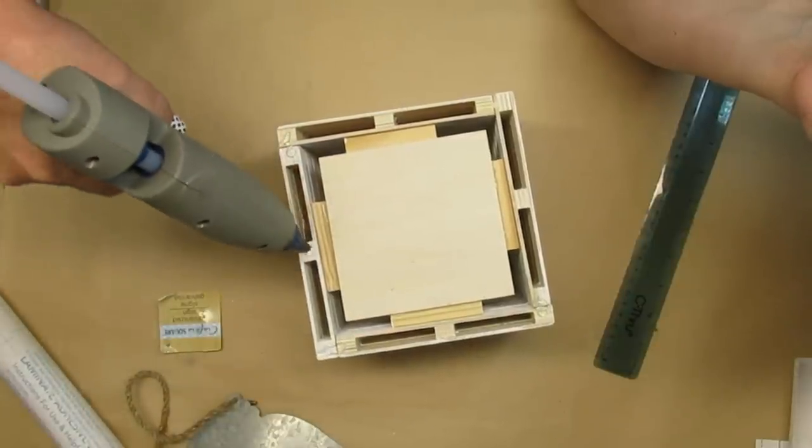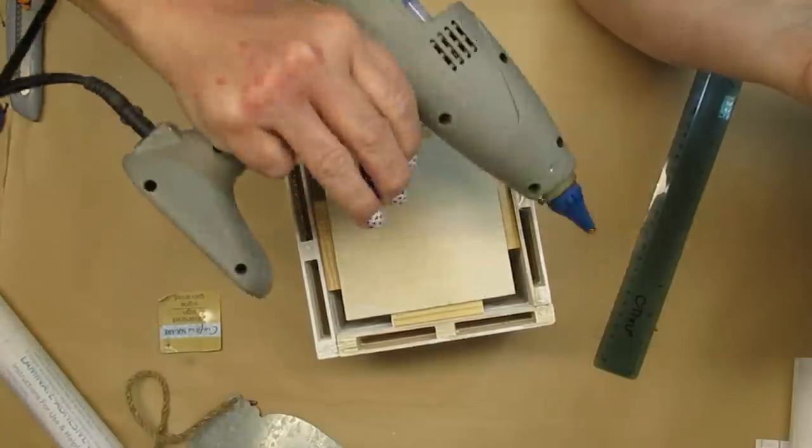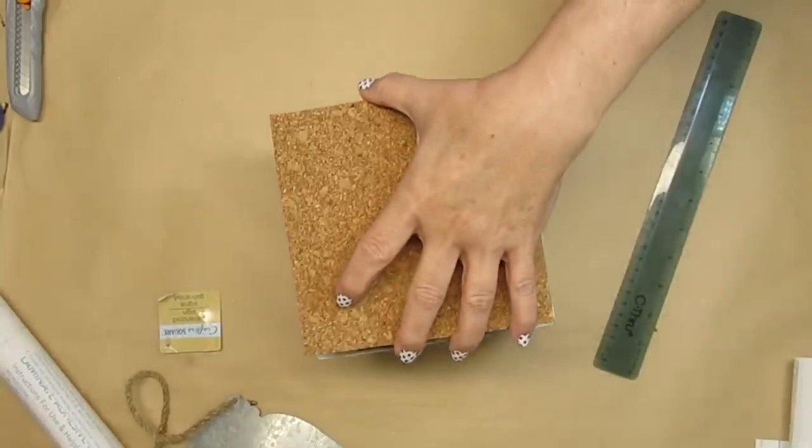Now I'm just going to use some hot glue and apply the cork to the bottom. You can see that there's some holes and there's a couple of tumbling tower blocks and anyway, I just wanted it to look a lot nicer.